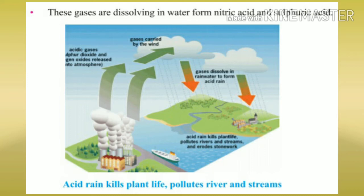Acid rain forms when gases are released through factories, industries, or automobiles burning fossil fuels. Oxides of sulfur and nitrogen are released into the wind and spread everywhere. When rain falls, these gases dissolve in water, forming nitric acid or sulfurous acid, which falls as acid rain. This affects plant life, aquatic animals, and terrestrial animals — causing skin cancer, disrupting the breeding process of aquatic organisms, and damaging plants.